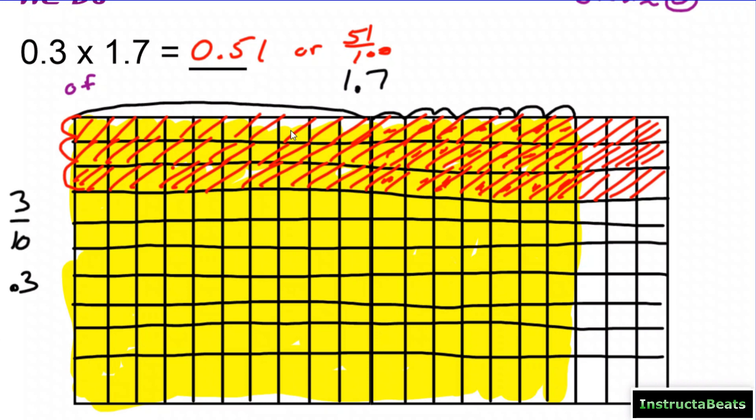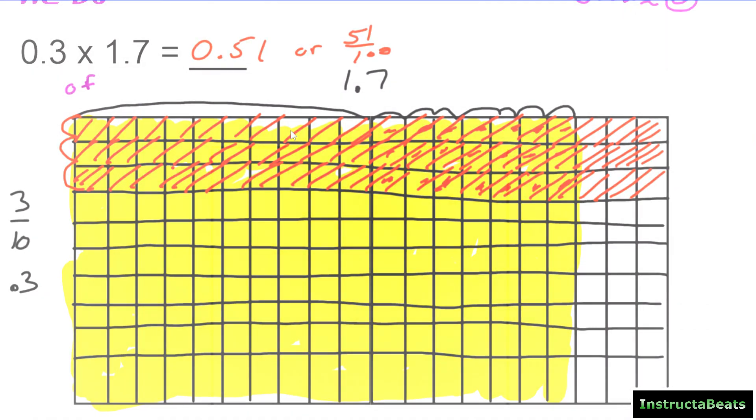Now I want to make sure my answer is reasonable and my decimal is in the right place. My estimate was about zero, and with the decimal placed here I have a whole number of zero — less than one, which is pretty reasonable. So this is a reasonable answer. Let's go ahead and try a 'you try' problem.